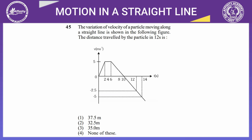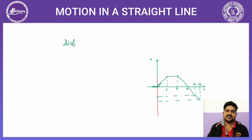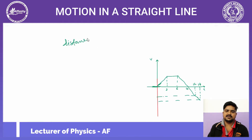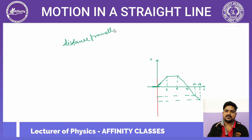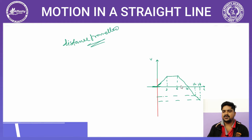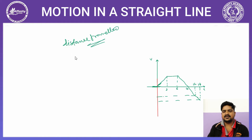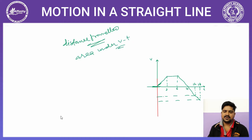The velocity of a particle moving along a straight line is shown in the figure. We need to find the distance traveled by the particle in 12 seconds. Distance traveled कितना होगा? Total area under the v-t graph निकालना होगा।